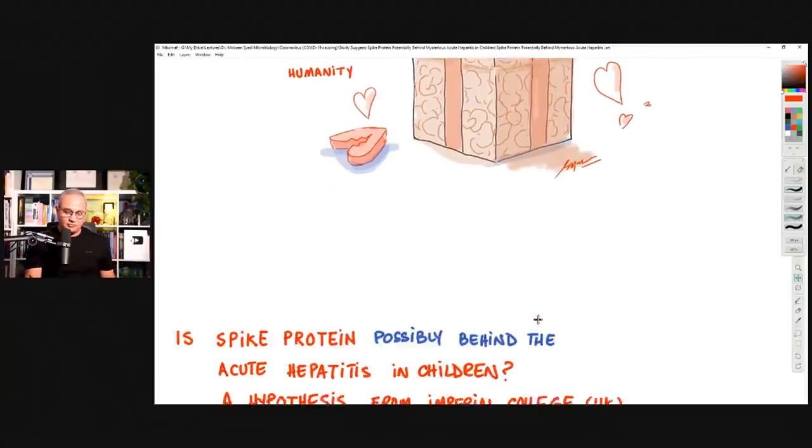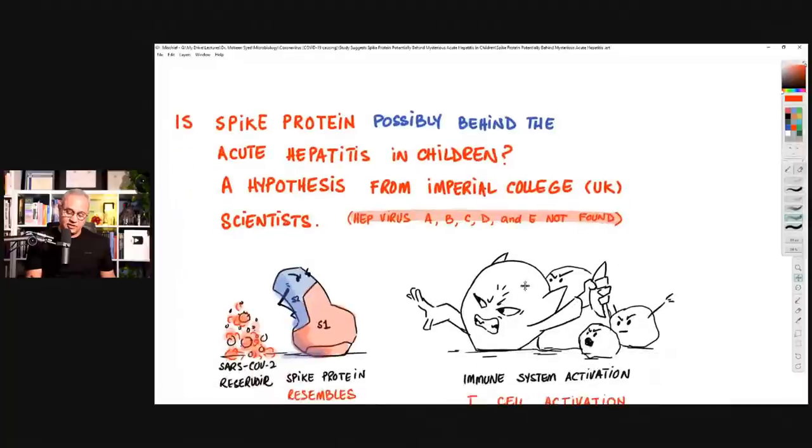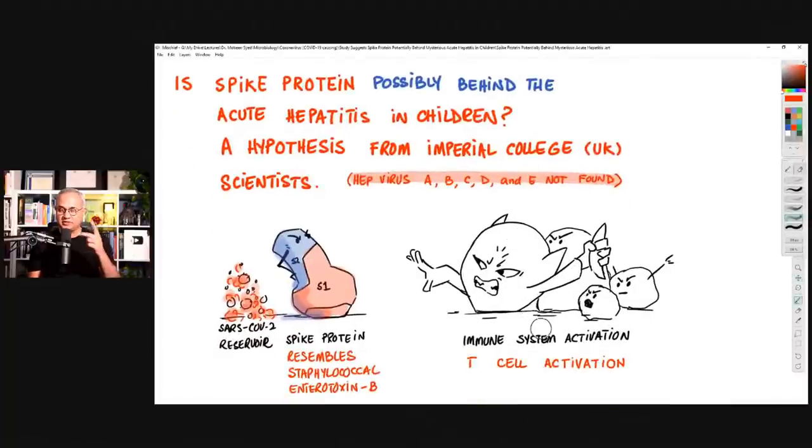So here is this summary. I'll present this whole discussion in two sections, summary and then the details. These children, majority of them, actually all of them, did not have any hepatitis A, B, C, D, or E virus in them. They have jaundice, then they develop hepatitis. Some of them end up in the hospital.